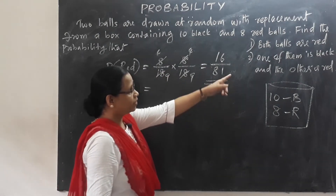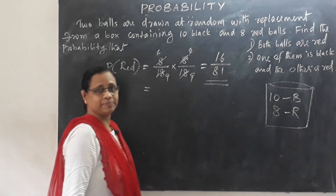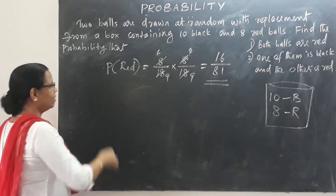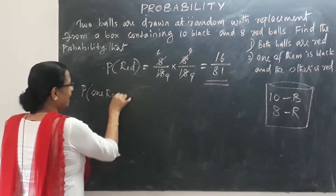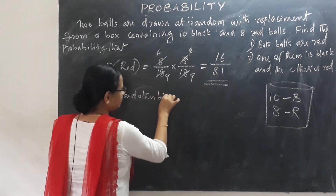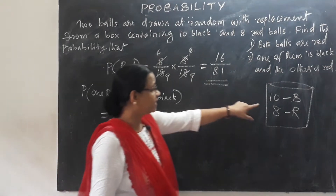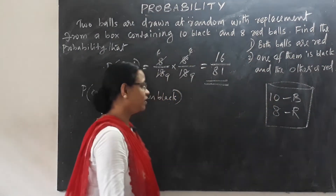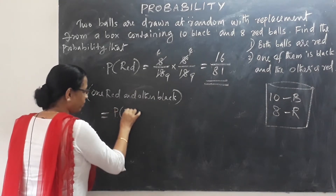For the second question, one ball is black and the other is red. The probability of black is 10/18, and the probability of red is 8/18.